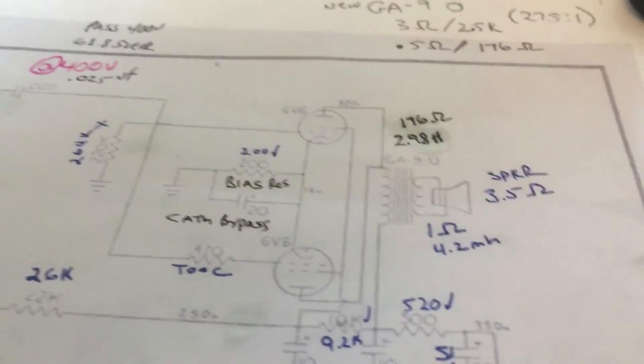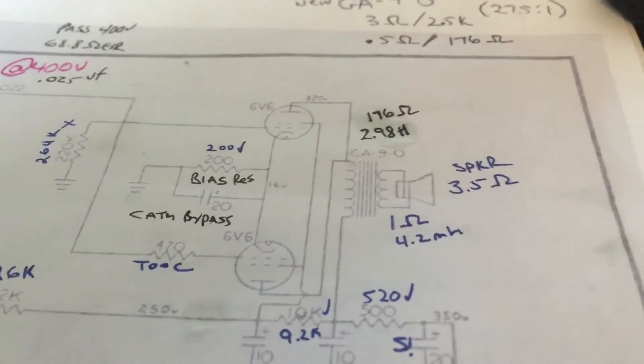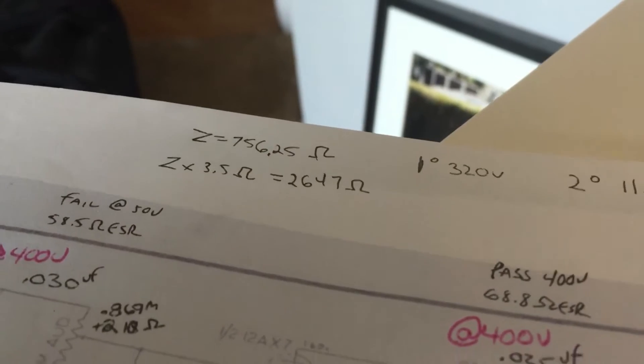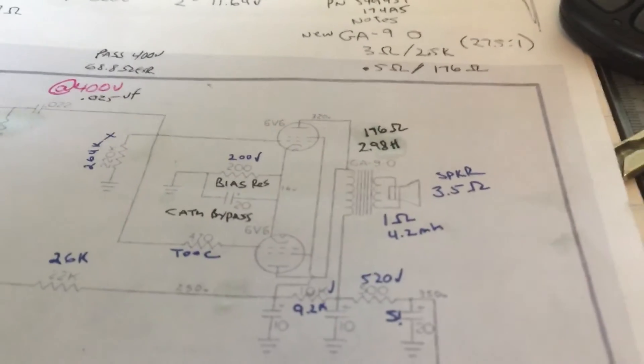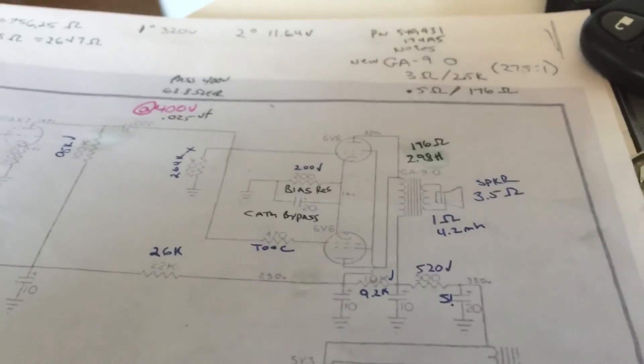because this one is a single-ended class A with two 6V6s, we double that value. So 2,647 becomes roughly around 5,000 ohms, which is exactly what we're looking for to drive this amplifier in this configuration. So we're going to say that that is good.